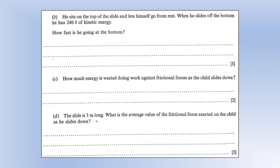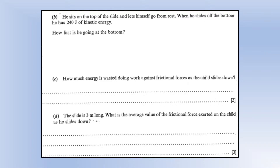He sits at the top of the slide and lets himself go from rest. When he slides off the bottom, he has 240 joules of kinetic energy. How fast is he going? We use KE equals half mv squared, rearrange to make speed the subject of the equation, plug the numbers in, and we get 4 metres per second.